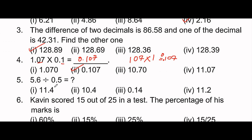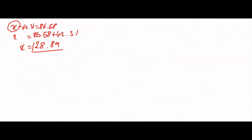Next: 5.6 divided by 0.5. The first rule of division with decimals: the numerator has 1 decimal digit and the denominator has 1 decimal digit, so 1 minus 1 equals 0. You multiply by 0 extra decimal places.